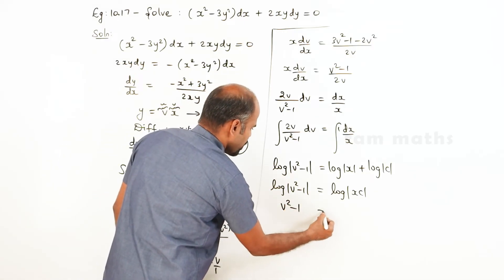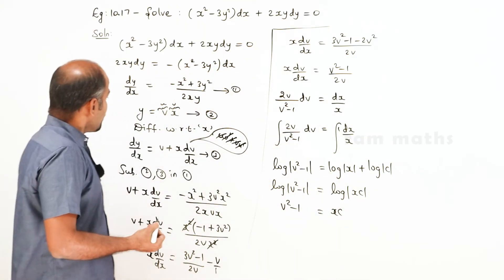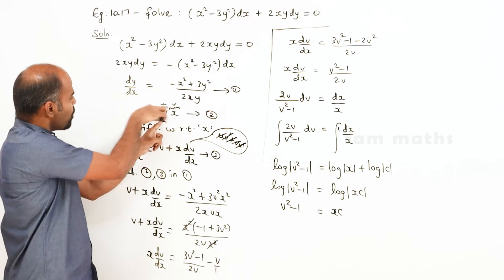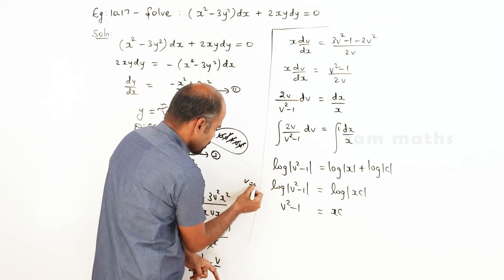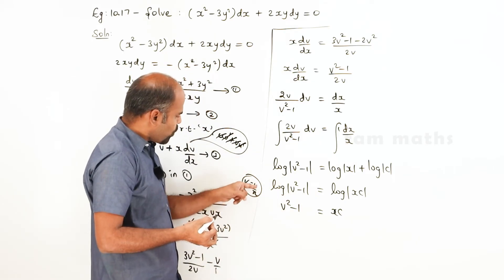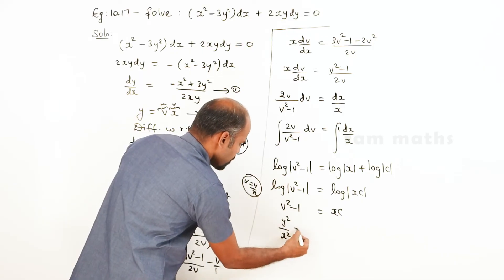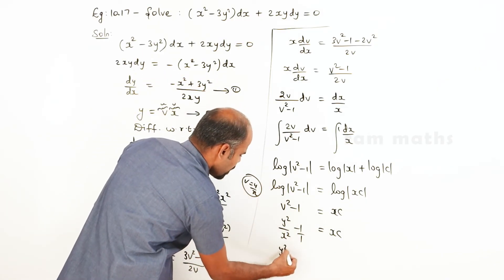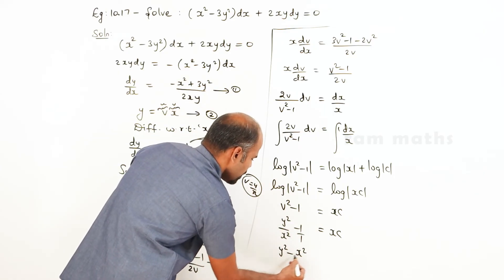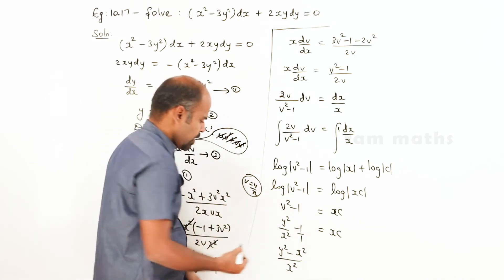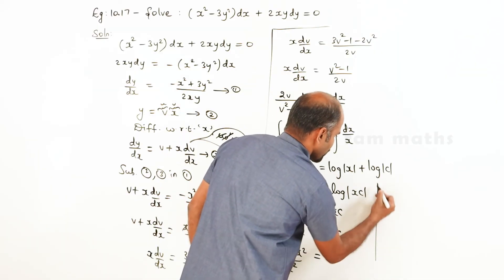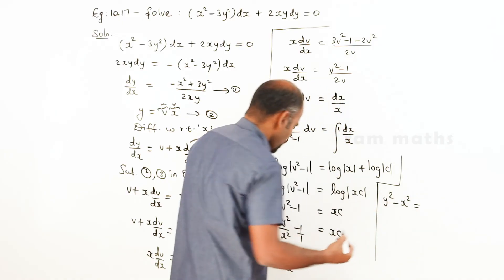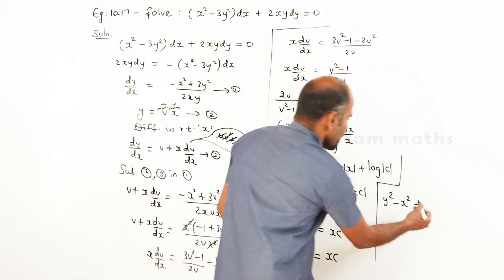Cancelling log from both sides: v² minus 1 equals cx. Now replacing v with y/x: (y/x)² minus 1 equals cx, so y²/x² minus 1 equals cx. Cross multiplying: y² minus x² equals cx times x² equals cx³, giving the final solution y² minus x² equals cx³.